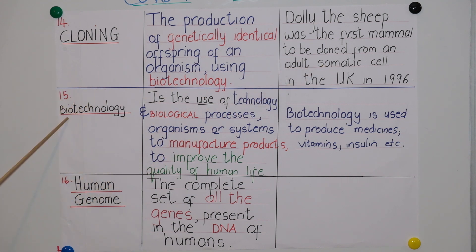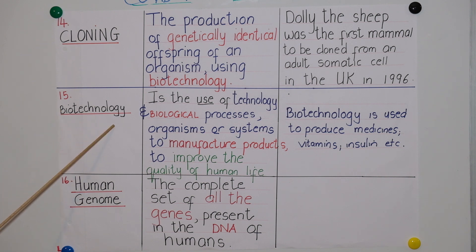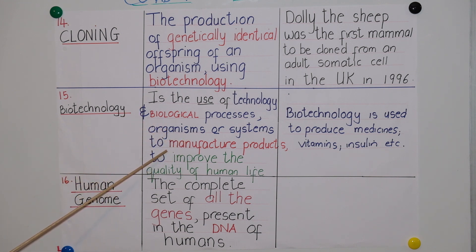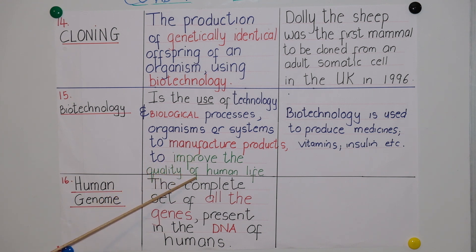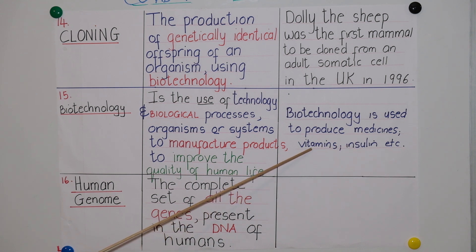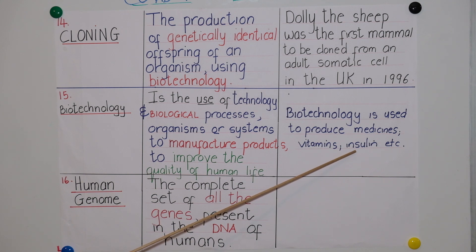The next concept is biotechnology. Breaking it into two parts — bio and technology — it is the use of technology and biological processes, organisms, or systems to manufacture products and improve the quality of human life. Biotechnology is used to make many products, including medicines to treat sick people, vitamins to enhance a healthy body, and insulin to treat diabetes.